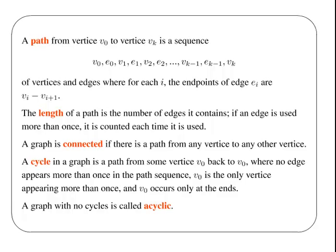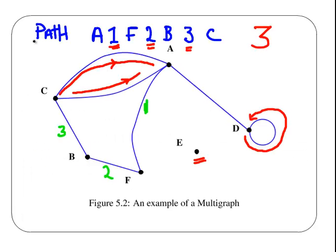A graph is connected if there is a path from any edge to any other edge. Now, let's look at this previous one here. This one is not connected, this graph is not connected, because there's nothing connected to E.